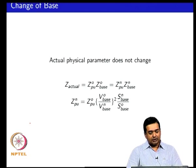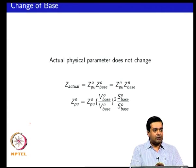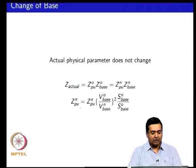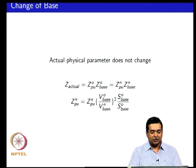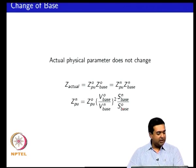For a change of base, the key idea is that the physical quantity does not change. If you change the base, the per unit value changes but the physical quantity stays the same. Using this concept, the per unit impedance on a new basis equals the old per unit value multiplied by (V_base_old / V_base_new)² and by (S_base_new / S_base_old).